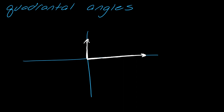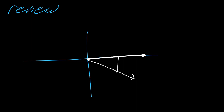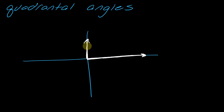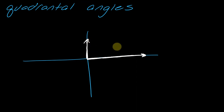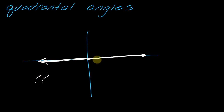Quadrantal angles — this is where it gets tricky. Normally I take a point on the terminal side and draw to the x-axis to get the sides of my right triangle. But with quadrantal angles, if I choose a point on the y-axis and draw down to the x-axis, this is a problem because I don't have a right triangle. And with 180 degrees, you can't make a right triangle at all. So how do we evaluate trig functions with these quadrantal angles?